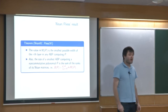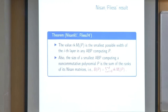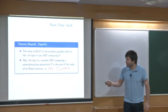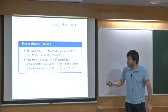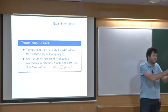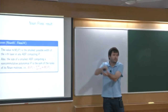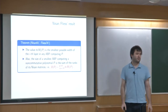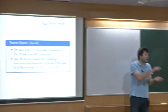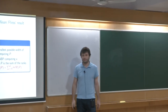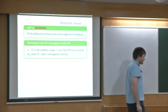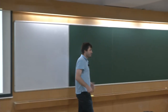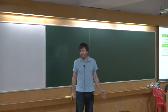You can also do this simultaneously for all layers. If you want to compute the smallest ABP overall — minimizing the sum across all layers — you can achieve exactly the sum of all the ranks simultaneously. So the minimal size of a layered ABP is exactly the sum of the M_i ranks.